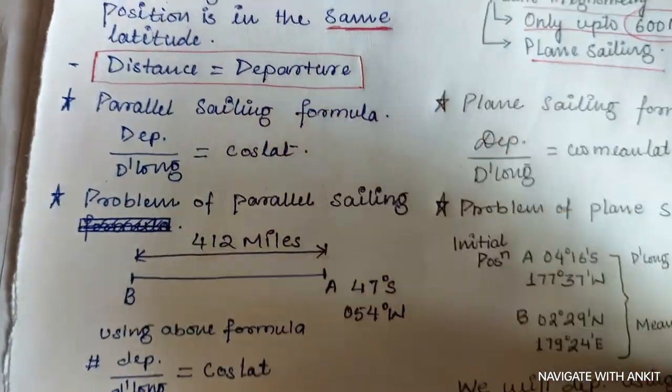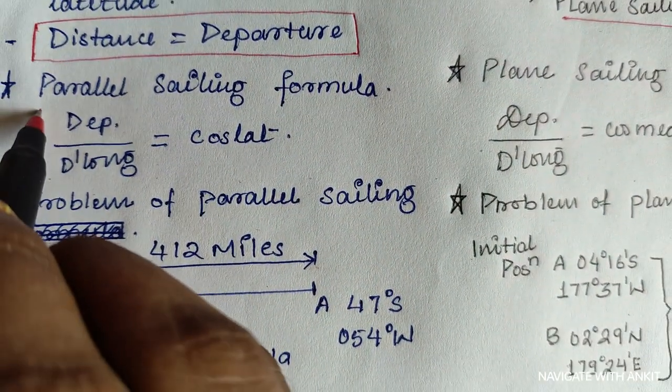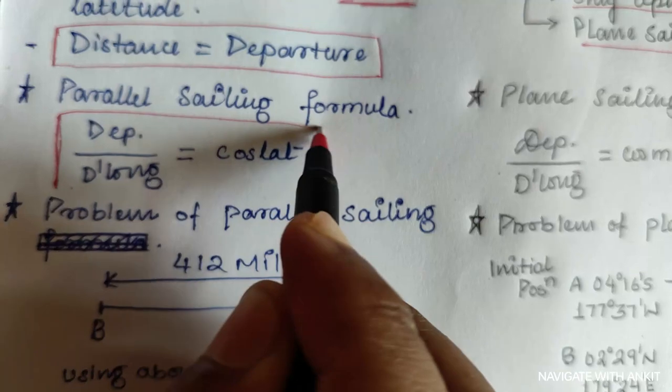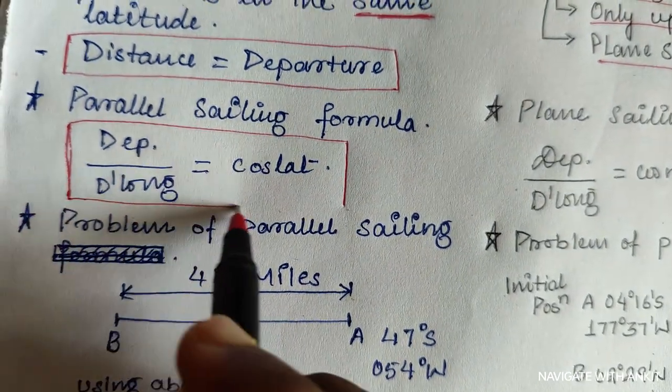So now the parallel sailing formula. The parallel sailing formula consists of departure upon D'long is equal to cosine of latitude.